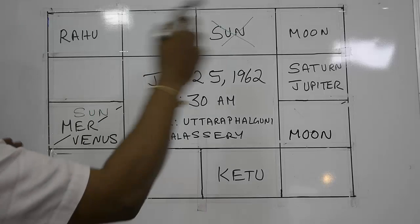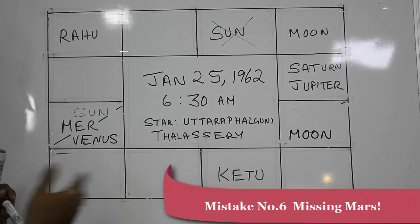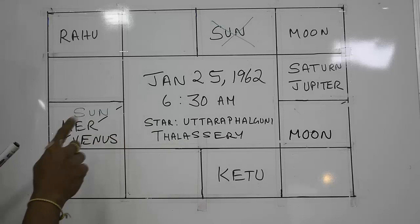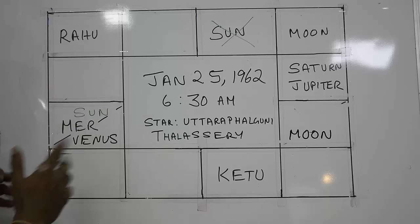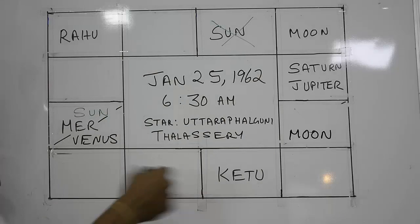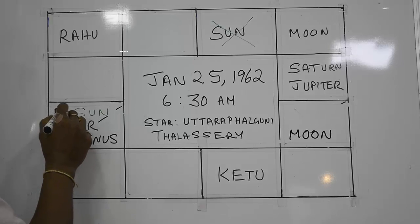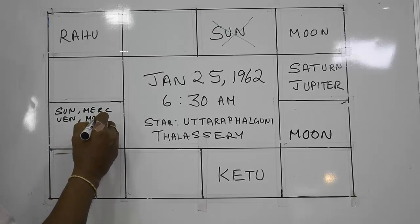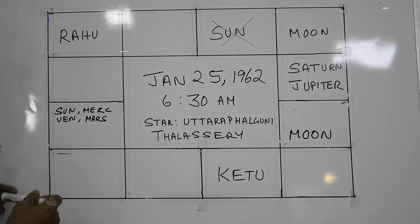The next mistake — lots of people got this — Mars is missing. The first thing you do in any horoscope is count the number of grahas or planets. You must have nine, and then search for the ascendant, making it ten. There are ten important factors in the horoscope, and Mars is not anywhere here. In this case Mars is over here, but we don't have space to write it in that position. We can't find exactly where Mars is without using a panchang or an ephemeris.